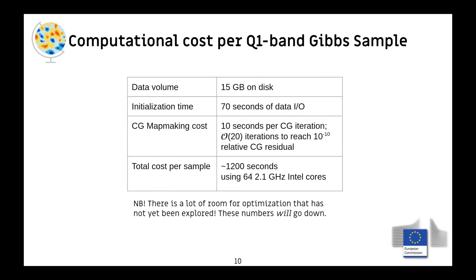How much does this cost? For the Q1 band, the data is about 15 GB on disk. It takes about 70 seconds to read all the data. A single conjugate gradient iteration for the map-making step takes about 10 seconds, done about 20 times — 200 seconds total. For a typical core on our cluster, a single Gibbs iteration processing Q1 once takes about 1200 seconds. This is sort of an upper limit because I didn't know Fortran when I started this project, so many things haven't been optimized. We have at least a factor of two improvement possible.